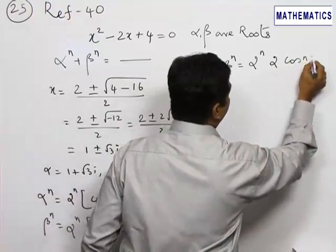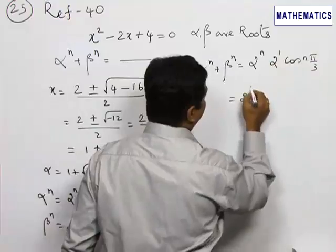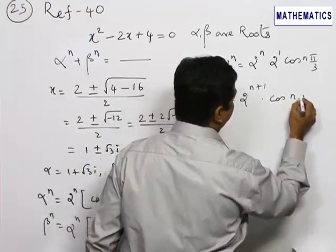2^n is added together, when we add that will be 2^(n+1) into cos(nπ/3).